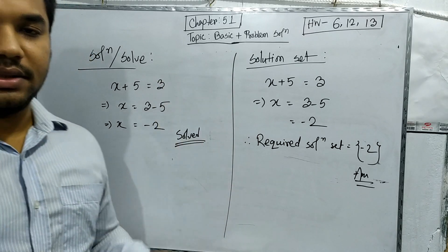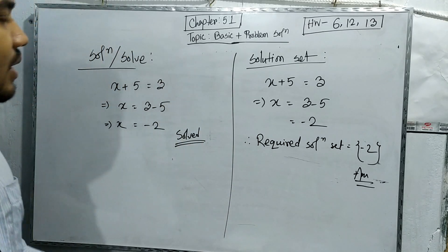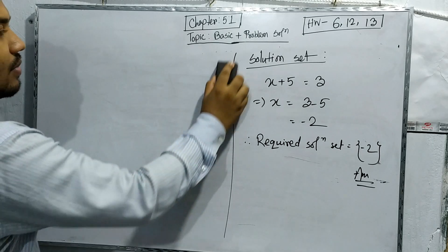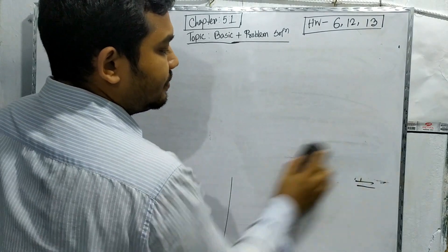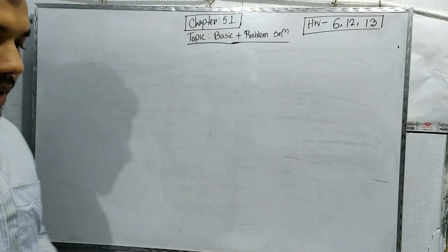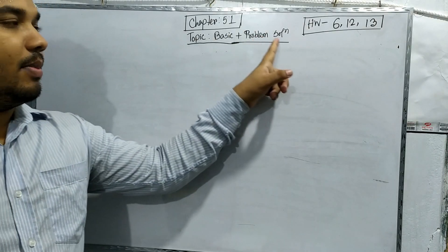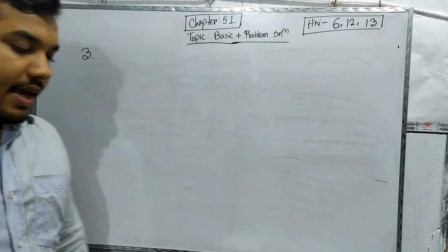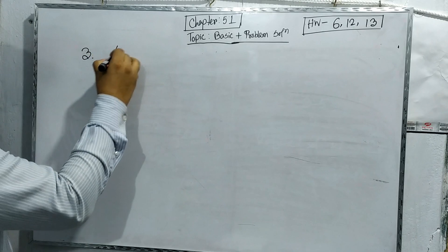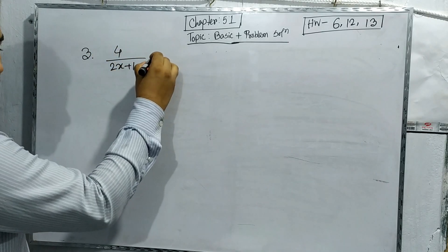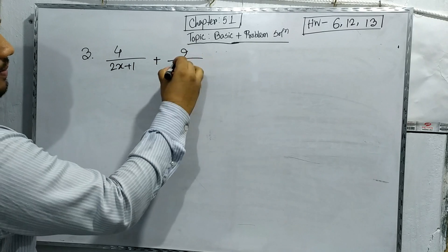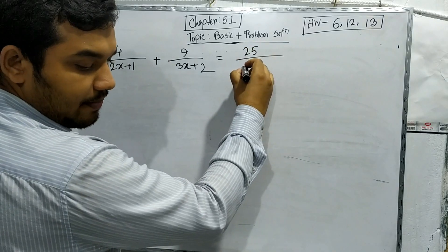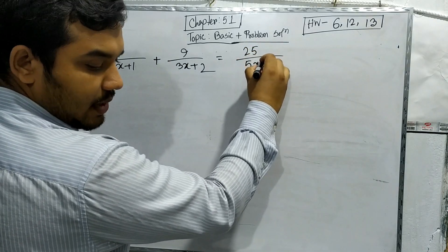This is the end of the basic section. Now we move on to problem solutions. Our first question is number 3: 4/(2x+1) + 9/(3x+2) = 25/(5x+4). We have to solve this problem.